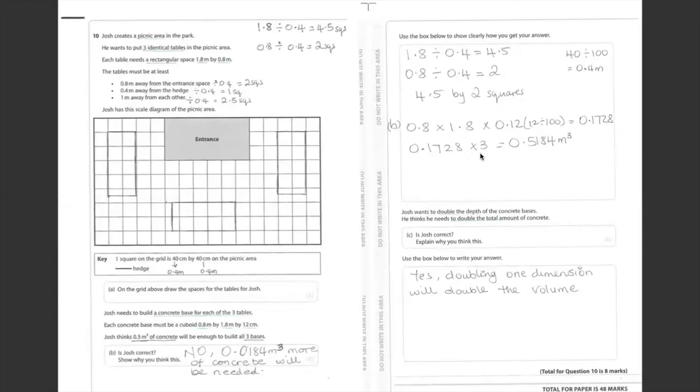Since we have three tables, we do 0.1728 times 3. It gives us 0.5184 cubic meters. Is he right? So he said 0.5 cubic meters. We can see he's not correct. So he needs 0.0184 cubic meters more.